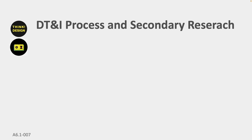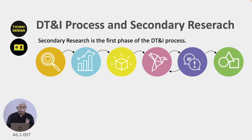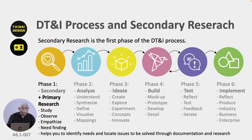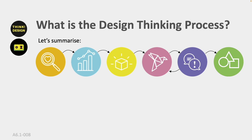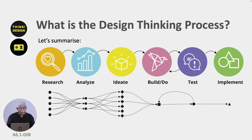If you look at it as part of the design thinking and innovation process, it is still the first phase. We finished secondary research and are now on to primary research, where we are trying to get original information to understand the user and their activities. That will be followed by analysis, ideation, building, testing, and implementing. If you look at the diagram, we are still at the stage where we are looking at lots of alternatives and trying to find relevant information before moving on to analysis.